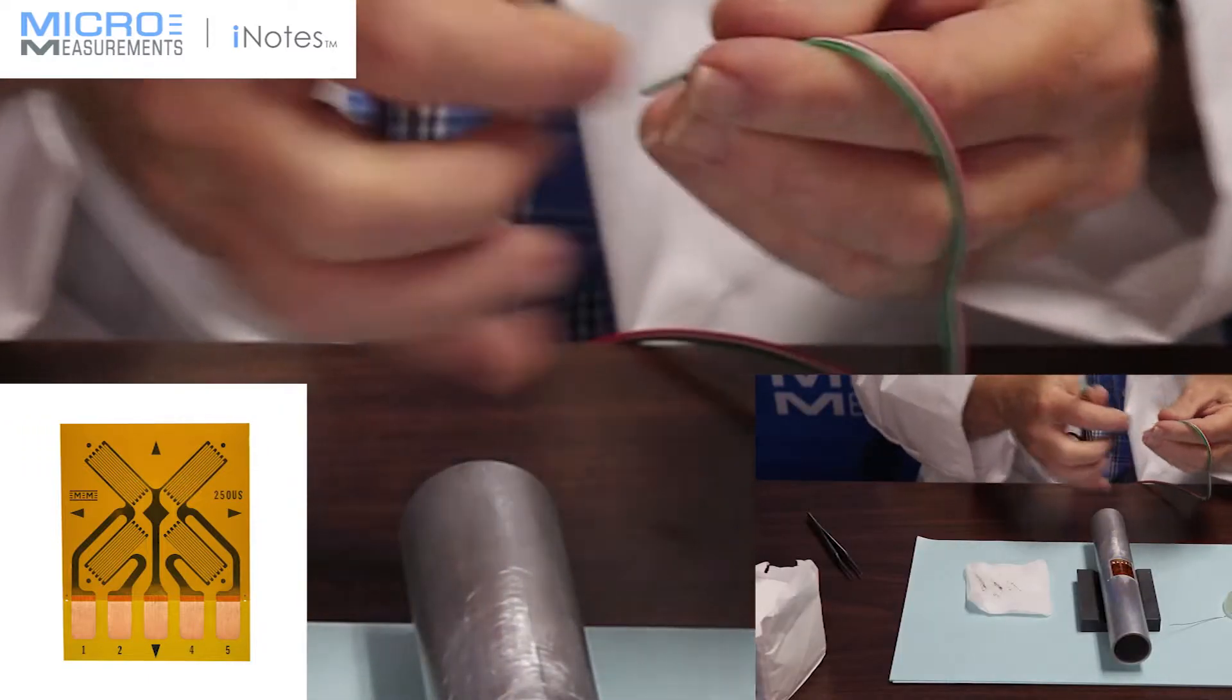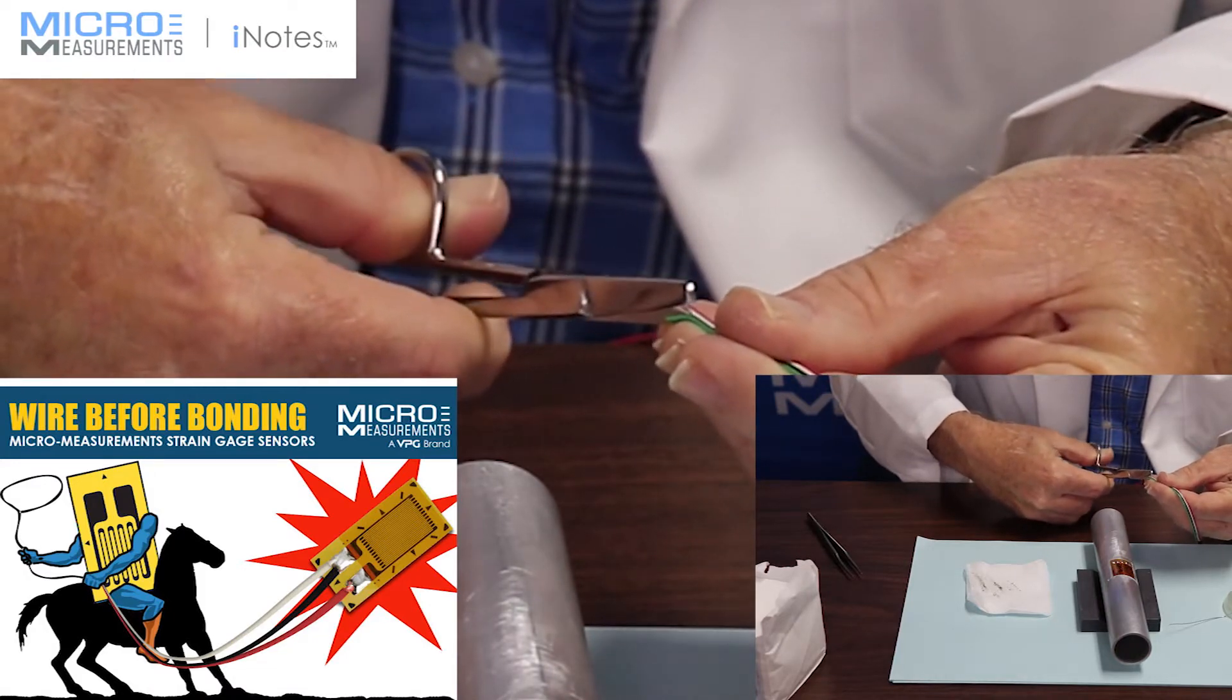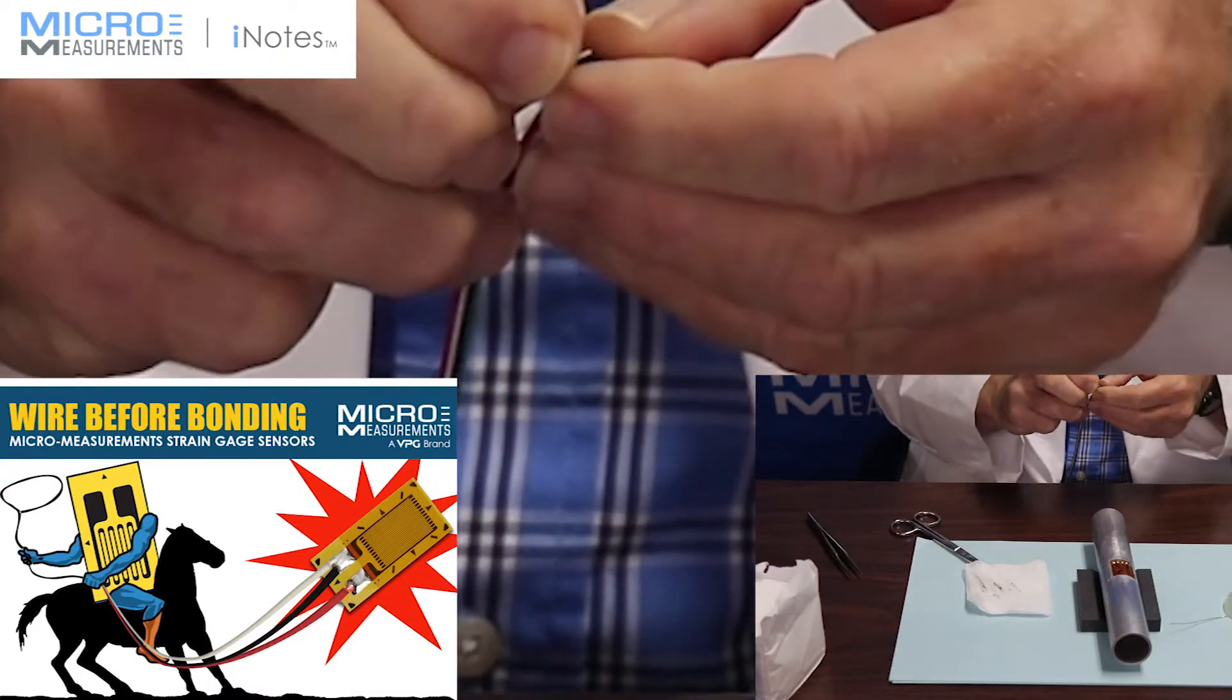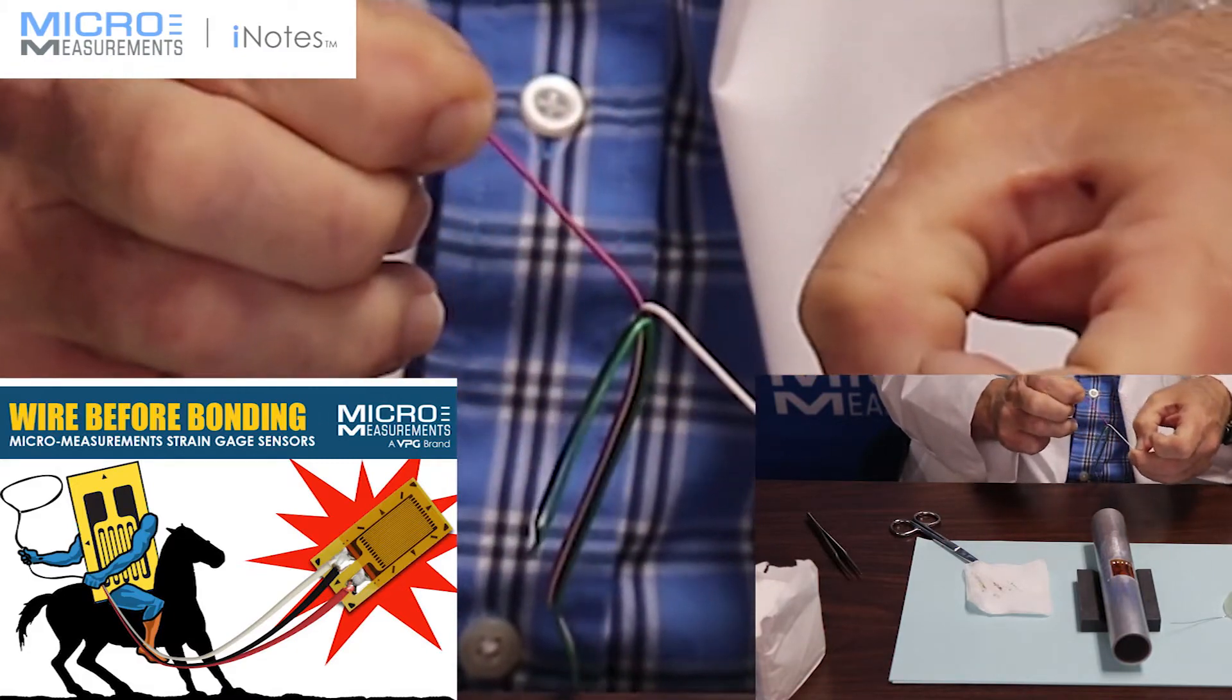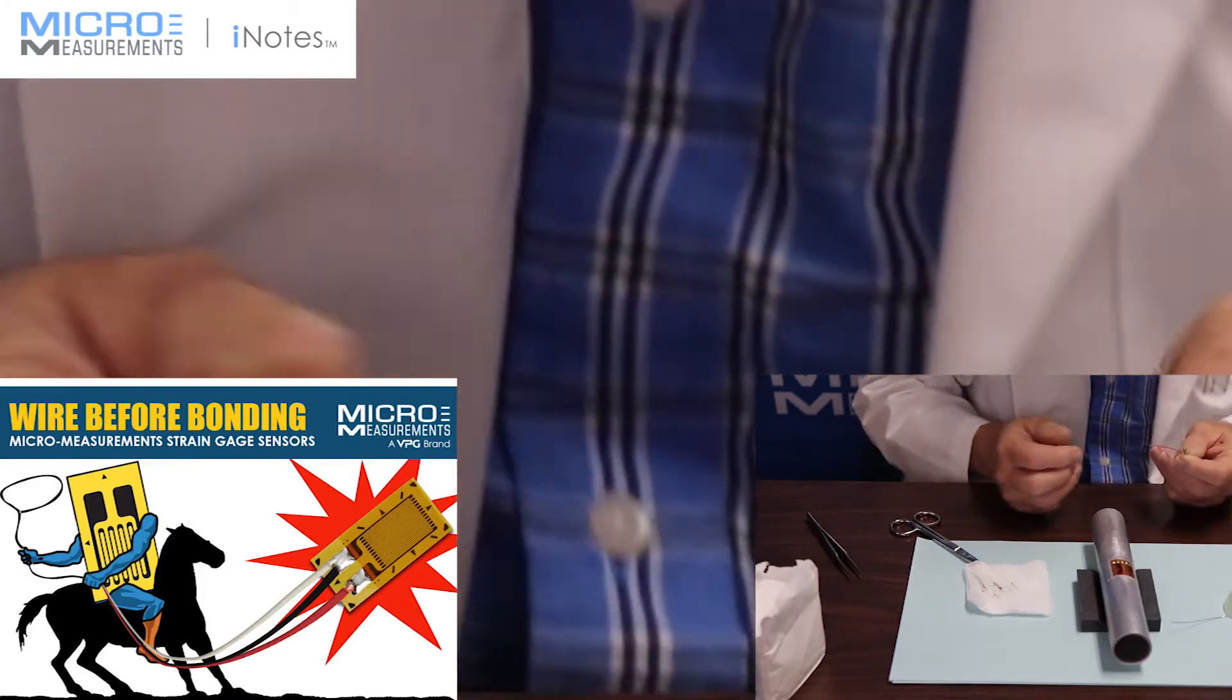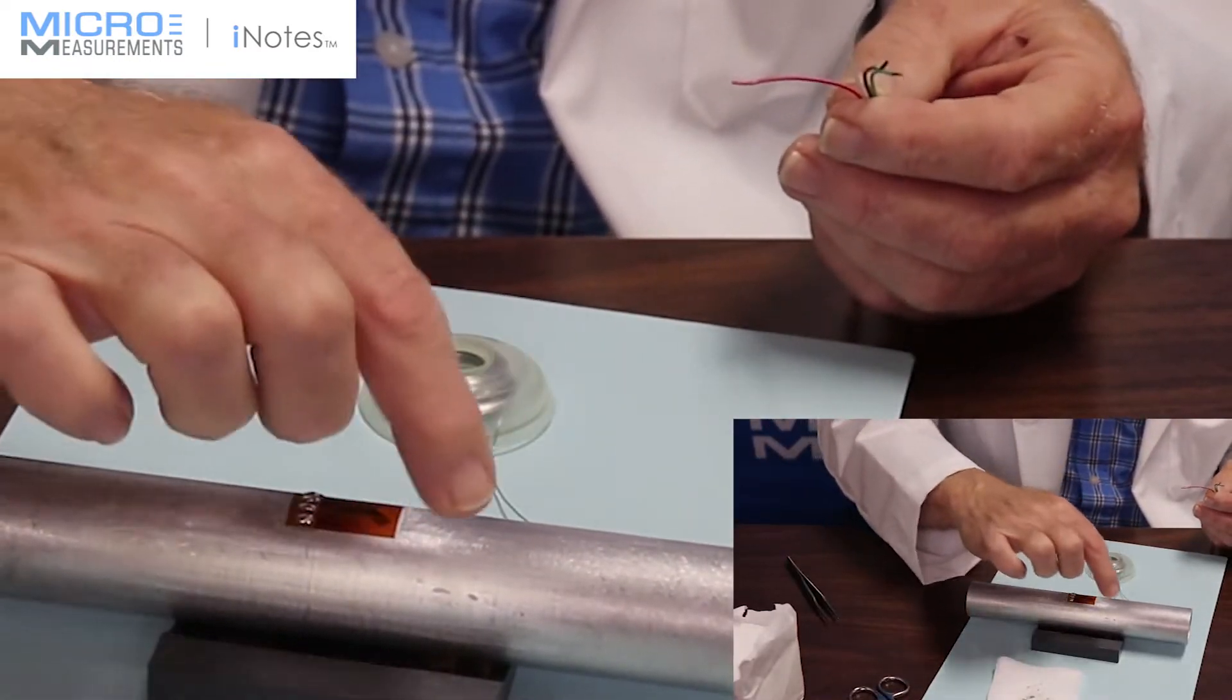I'm going to use my surgical shears, and I will strip them back. Now, because this is a full bridge device, we have to pay attention to polarity. Depending upon how this is going to work out, we're going to have two gauges in tension and two in compression.